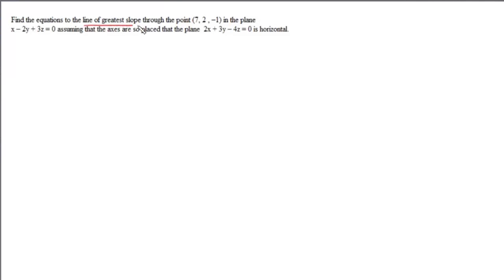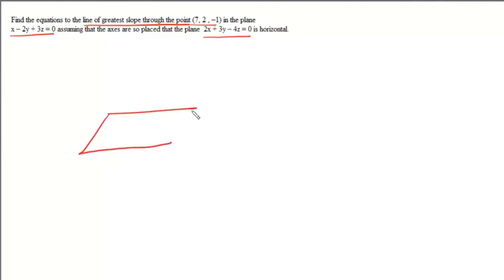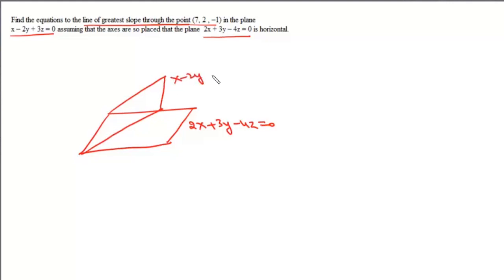The question is: find the equation of the line of greatest slope through the point (7, 2, -1) in the plane x + 2y + 3z = 0, assuming that the axes are so placed that the plane 2x + 3y - 4z = 0 is horizontal. We have this plane 2x + 3y - 4z = 0 placed horizontally, and another plane x + 2y + 3z = 0. We need to find the equation of the line of greatest slope in this first plane passing through the point (7, 2, -1). This line of greatest slope will make an angle of 90 degrees with the line of intersection of these two planes.